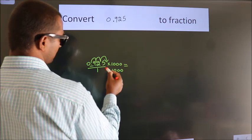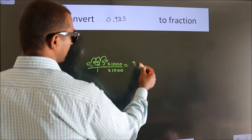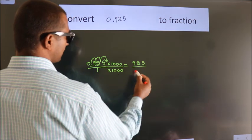Next. 0.925 into 1000 equals 925. 1 into 1000 equals 1000.